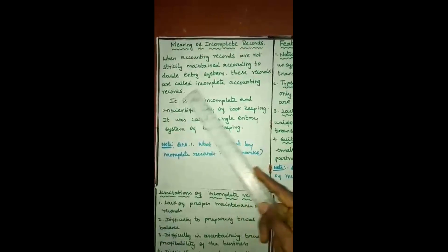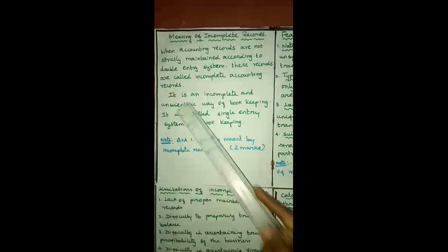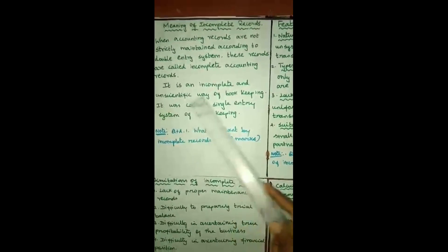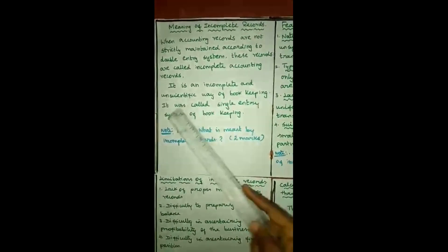Now we see the meaning of incomplete records. When accounting records are not strictly maintained according to the double entry system, these records are called incomplete accounting records. It is an incomplete and unscientific way of bookkeeping, so it is called the single entry system of bookkeeping.